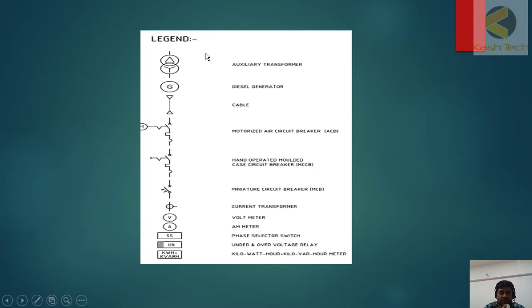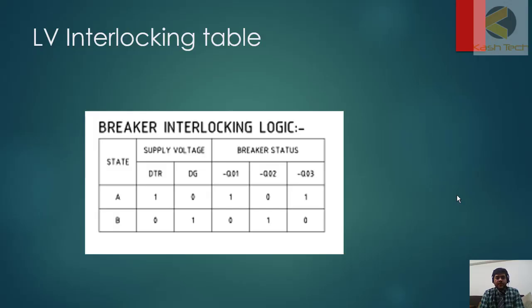Here you can see legends: this is the symbol of transformer, generator, cable, and you can see motorized air circuit breaker symbol, hand-operated molded case circuit breaker, miniature circuit breaker, current transformer, voltmeter, ammeter, selector switch, under voltage and over voltage relay, and meters. Here interlocking table is shown how it is working.